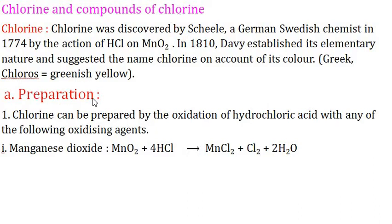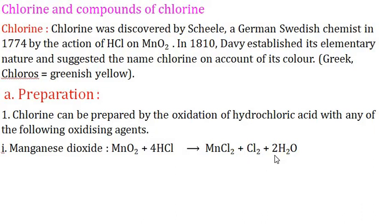Preparation of chlorine: chlorine can be prepared by the oxidation of hydrochloric acid with oxidizing agents. First method — using manganese dioxide: MnO2 reacts with HCl to form manganese dichloride (MnCl2), with the elimination of chlorine gas and water molecules.